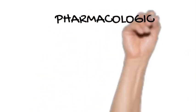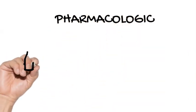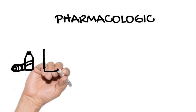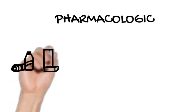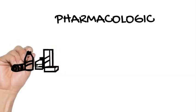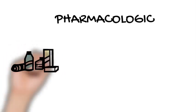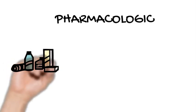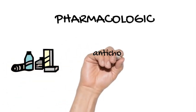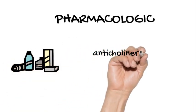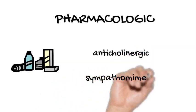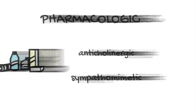Pharmacologic causes. Medications with anticholinergic properties cause urinary retention by decreasing bladder detrusor muscle contraction. Sympathomimetic drugs such as oral decongestants cause urinary retention by increasing alpha-adrenergic tone in the prostate and bladder neck.